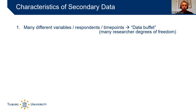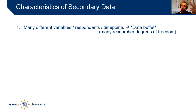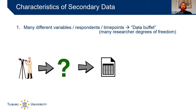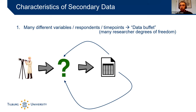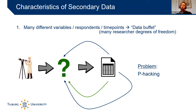Some characteristics of secondary data: there are often many different variables, respondents, and time points — like those large European surveys. This creates a kind of data buffet with so many things to choose from, which means many researcher degrees of freedom. A researcher can use one variable or another, and maybe the last one gives a significant result. This is a problem called data-contingent decision making, or p-hacking — where you first look at the result and then decide what to do. One solution to that is pre-registration, which limits you to what you predefined.